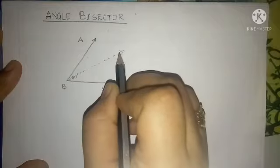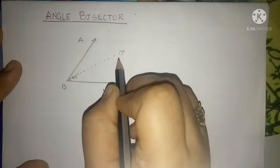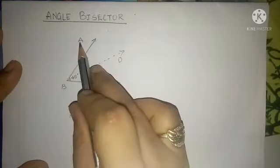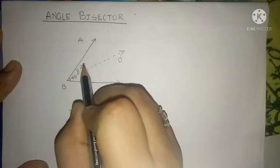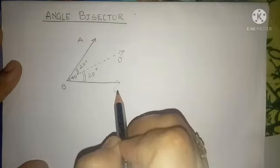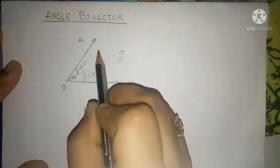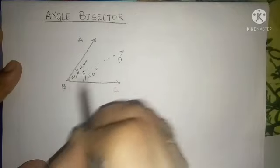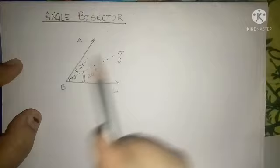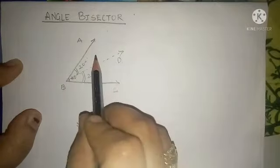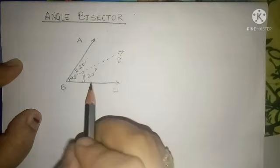Suppose I have named this ray BD. So ray BD is dividing angle ABC into two equal parts. This angle will become 20 degrees and the other angle will also become 20 degrees. Angle ABC is divided by ray BD into two equal parts, so such a ray is known as the angle bisector. A ray which divides an angle into two equal parts is known as your angle bisector. Here angle ABC has been divided into two equal angles.